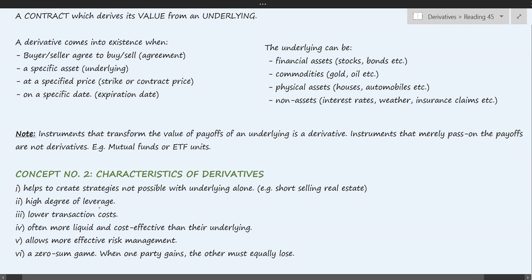The second point is a high degree of leverage, which means you have to put in a very small amount of capital to trade in larger volumes. The third point is lower transaction costs than the underlying market, because derivative markets are more efficient — there are a large number of participants, the market is very liquid, and that offers a very cost-effective way to trade.